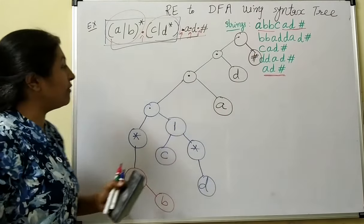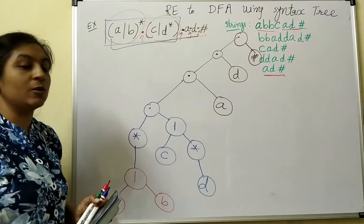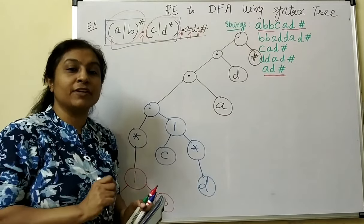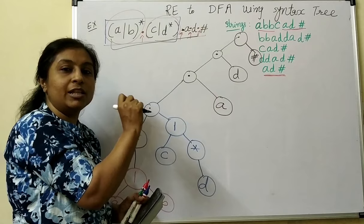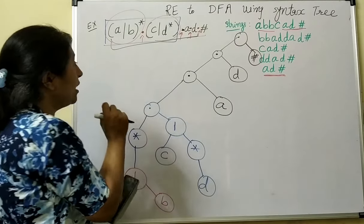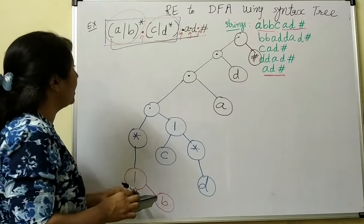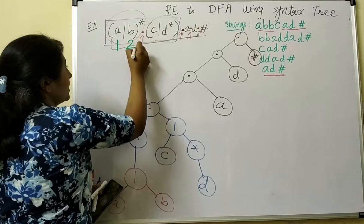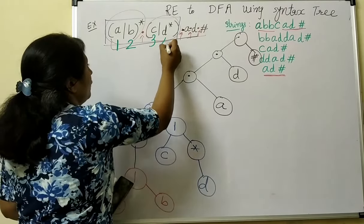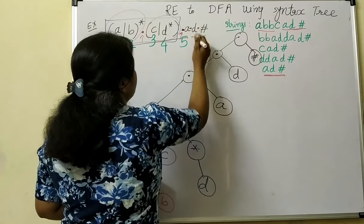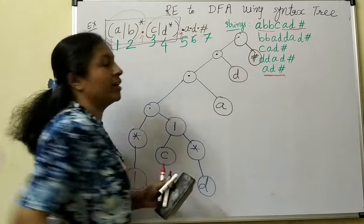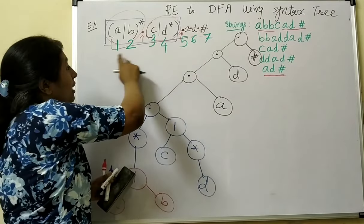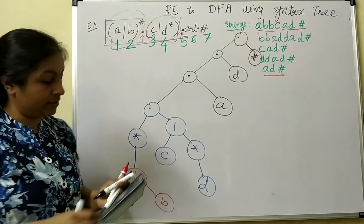This is the equivalent syntax tree for the given regular expression. Now once the syntax tree is constructed, we have to find the first position of each and every symbol. For that, give a number to each symbol: the first symbol is given number 1, second is 2, then 3, 4, 5, 6, and hash is given number 7. Note that two symbols may share the same name but still receive different numbers.